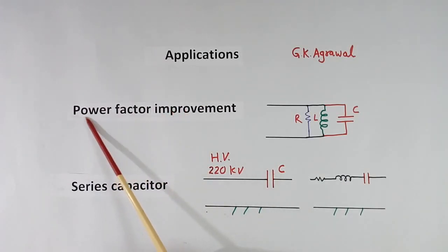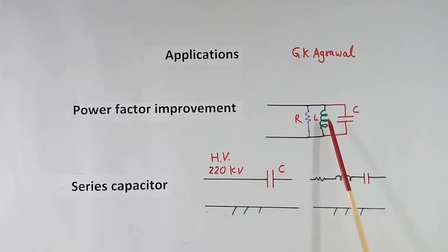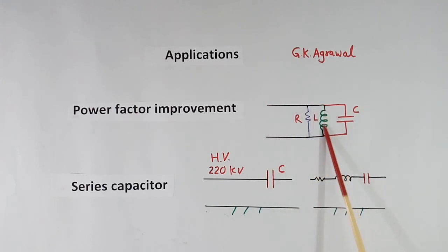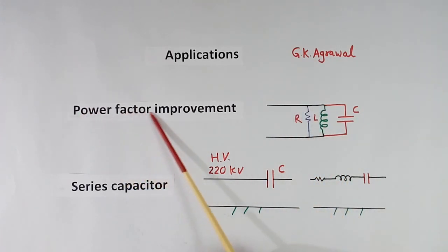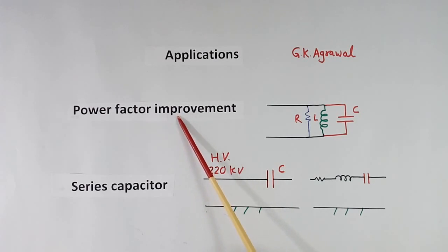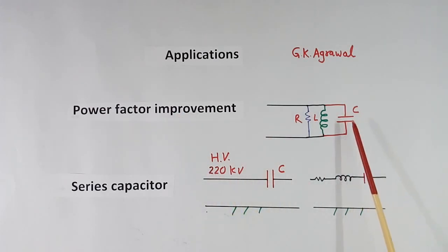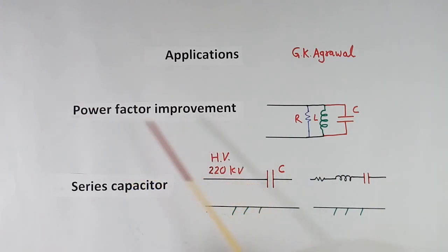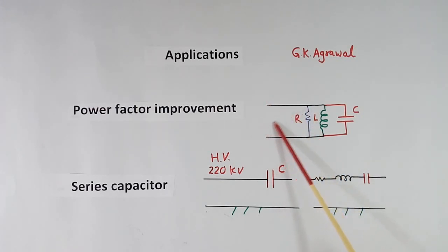Another application is power factor improvement. When we connect a load, generally the load will have R and inductance L also. Because of this inductance, a reactive current will flow. Because of reactive current, power factor will come down. To improve that, we connect a capacitor. Capacitor characteristics and inductor characteristics are reverse in nature, so they will cancel out and power factor will improve. If we don't improve power factor, unnecessary current will flow, that will load the wire and source also.